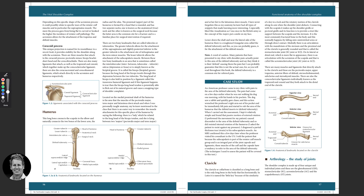Halfway down the humerus we've got the deltoid tuberosity — a tubercle where the main deltoid muscle attaches. Along here we've got the lateral supracondylar ridge, where the brachioradialis comes down. The lateral epicondyle is associated with tennis elbow, and the medial epicondyle is associated with golfer's elbow or medial epicondylitis. The capitulum and trochlea are part of the distal humerus, with the coronoid fossa located here. The olecranon process is where the triceps attaches, and the radial groove is where the radial nerve runs.